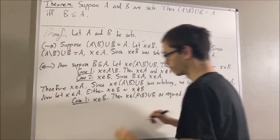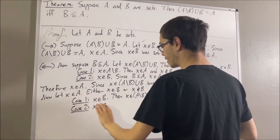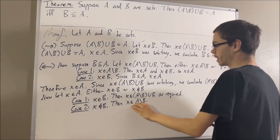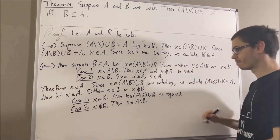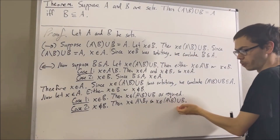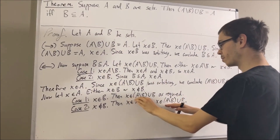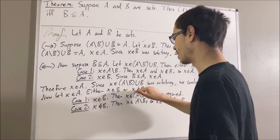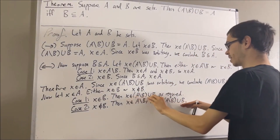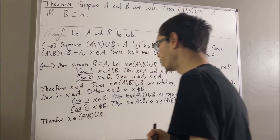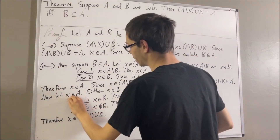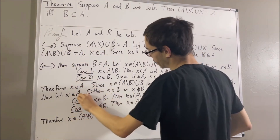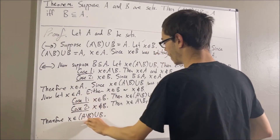Now let's move on to case 2, where X is not an element of B. Well, since X is an element of A and X is not an element of B, we have that X is an element of A set minus B. So again, we have that X is an element of A set minus B or B — and that's exactly what we wanted to prove. So in either case, we have that X is an element of A set minus B union B. Since X was arbitrary, this means everything in A is also in A set minus B union B. So A is a subset of A set minus B union B.